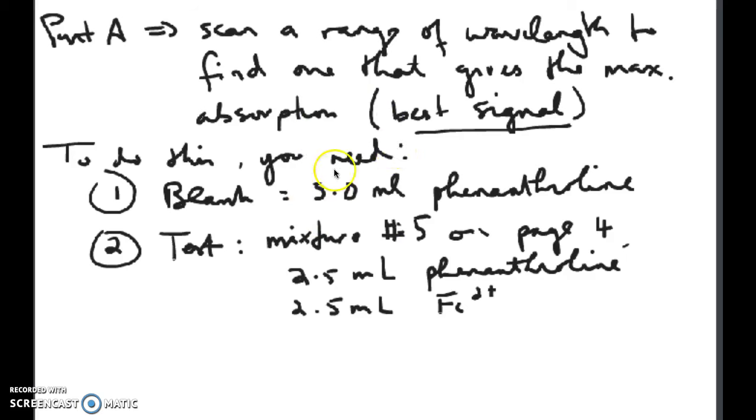Once you find that wavelength, you need to zero the spectrophotometer. The way to do that was described in the previous video. Once you get it to read zero, take the blank solution out, put another cuvette in filled with the test solution, and read the absorbance on the spectrophotometer. Write that down and move on to the next solution.